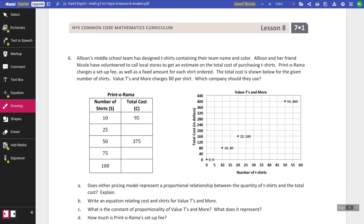Six. This one gets complicated here. Allison's middle school team has designed t-shirts containing their team name and color. Allison and her friend, Nicole, have volunteered to call local stores to get an estimate on the total cost of purchasing t-shirts. Print-O-Rama charges a setup fee, as well as a fixed amount for each shirt ordered. The total cost is shown for the given number of shirts. Value tees and more charges $8 per shirt. Which company should they use?